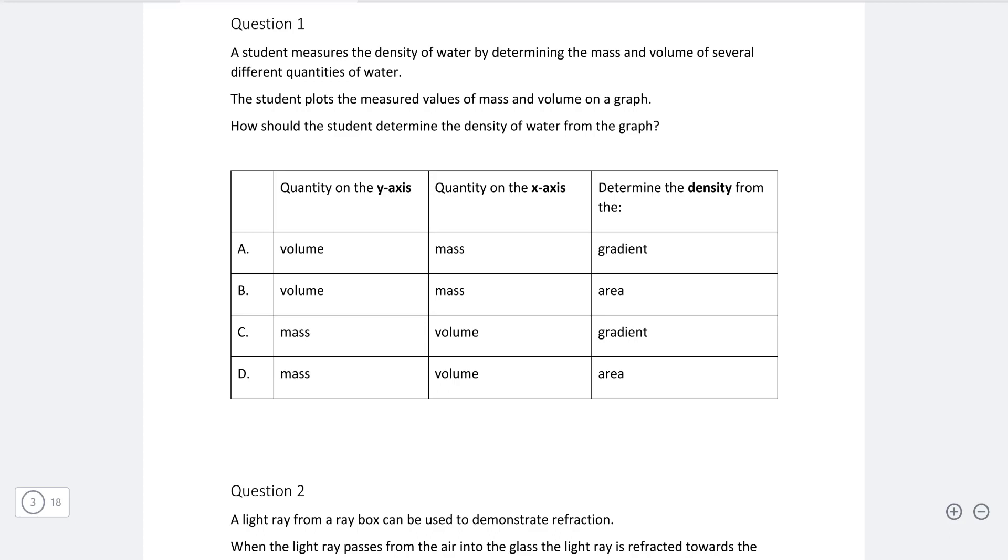Okay, so question one: we have a student that measures the density of water by determining the mass and volume of seven different quantities of water. The student then plots the measured values of mass and volume on a graph. How should the student determine the density of water from the graph?